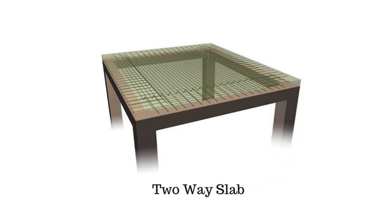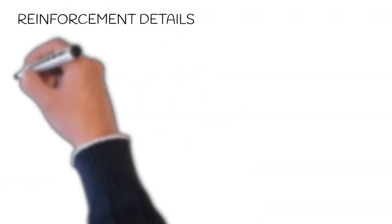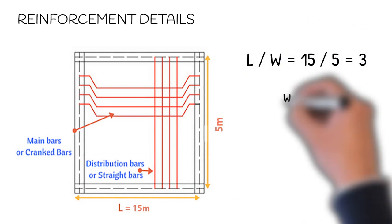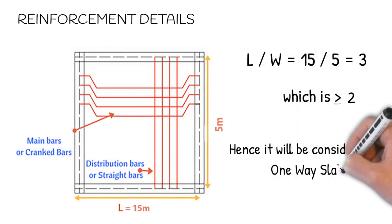One-way slab reinforcement details: From the figure, it is clear that L/W (longer span by shorter span) equals 15 by 5, that is 3. Hence one-way slab is adopted where cranked bars are provided on the shorter side of the slab due to bending, and distribution bars are provided on the longer side, as shown in the figure.